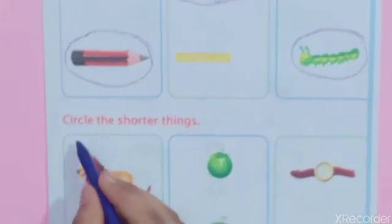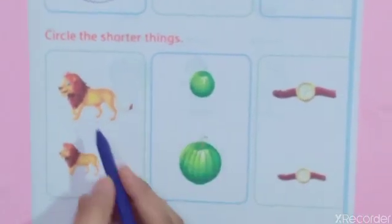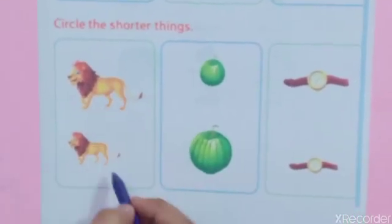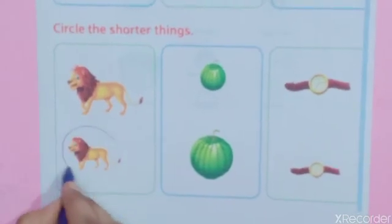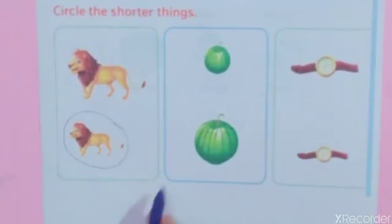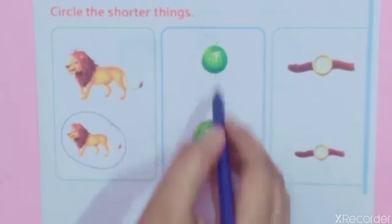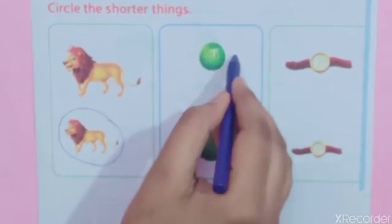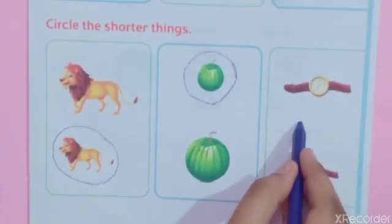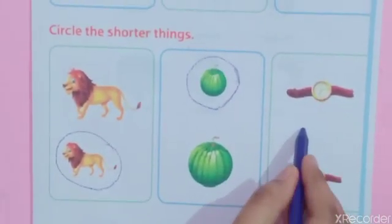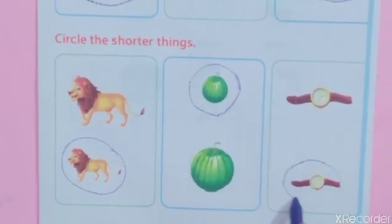Now, next — circle the shorter things. Which one is shorter? This one is shorter. In the next picture, which one is shorter? Shorter. In the next picture, which one is shorter? This one.